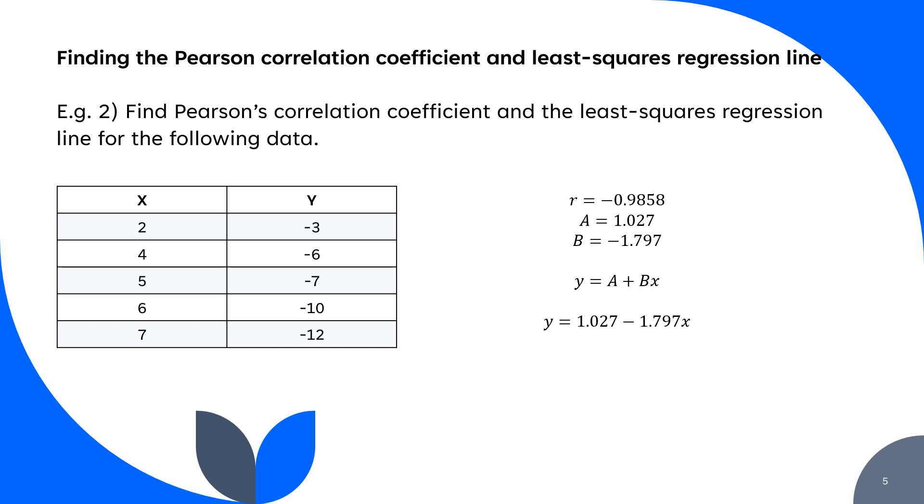This is a negative correlation because it's got a negative Pearson's correlation and also a negative gradient. That means our formula for our equation of our least squares regression line, or line of best fit, is y equals 1.027 minus 1.797x.